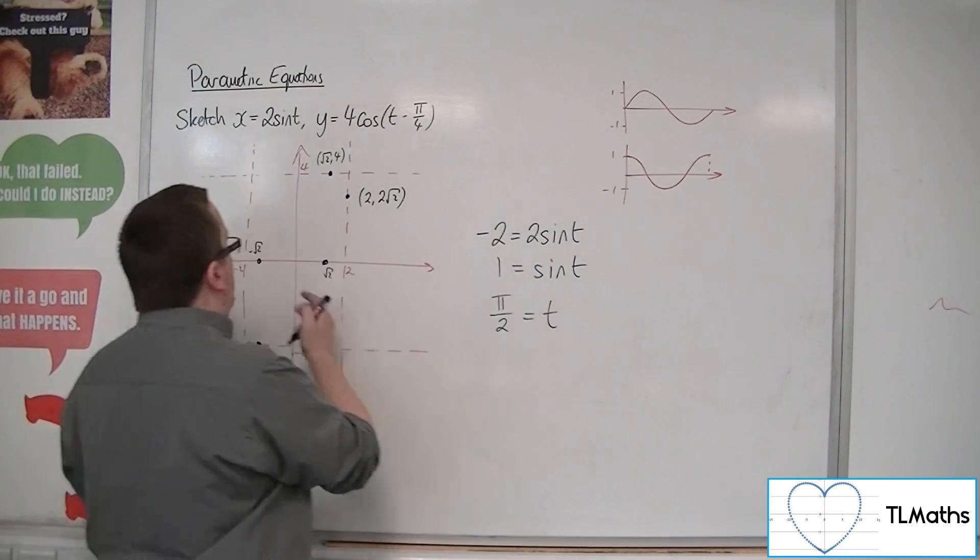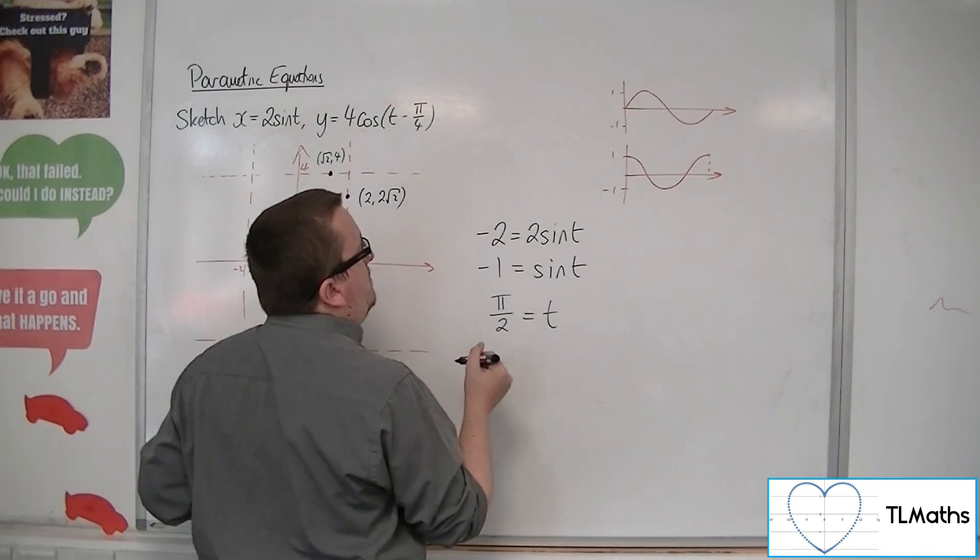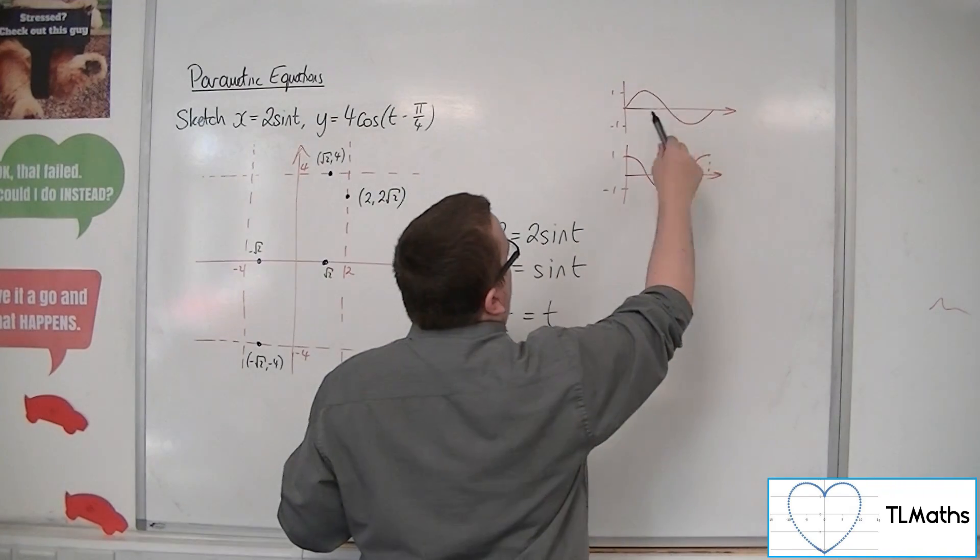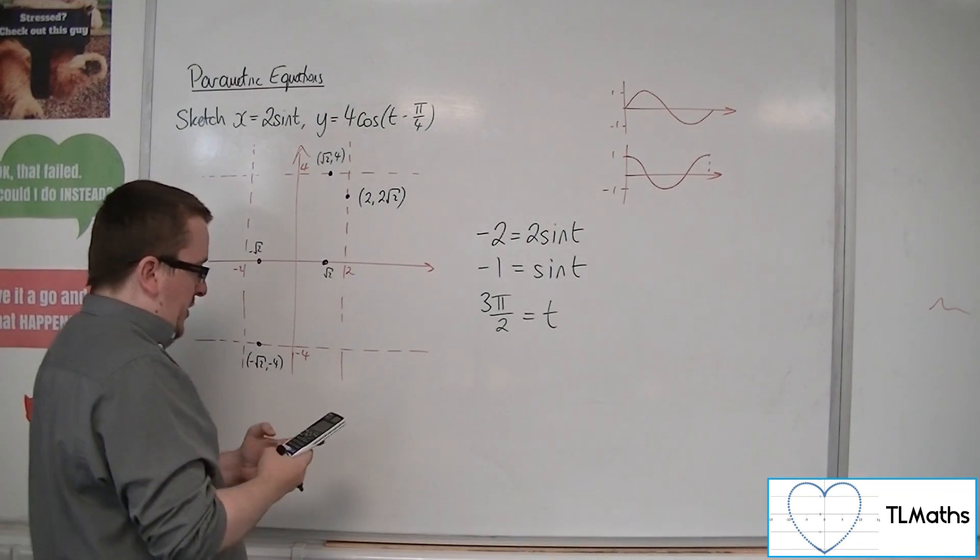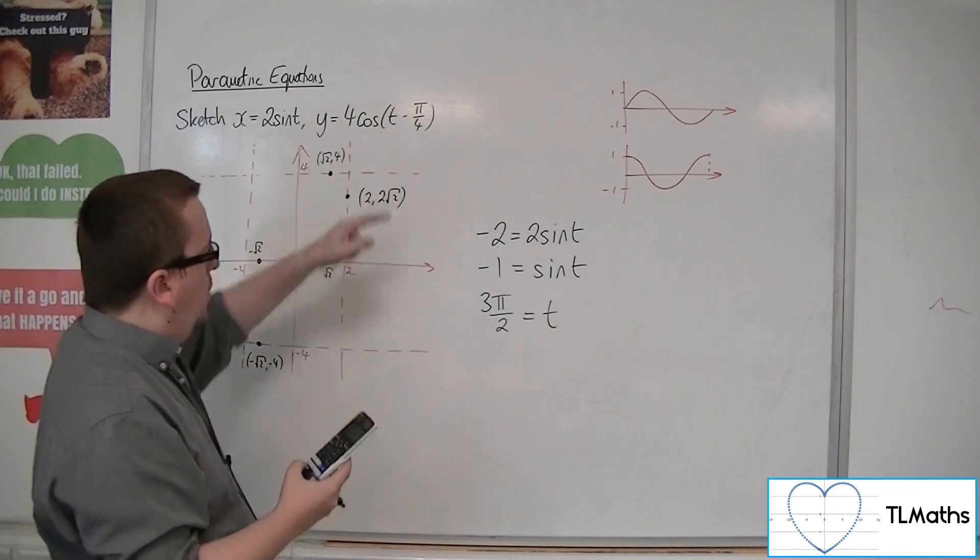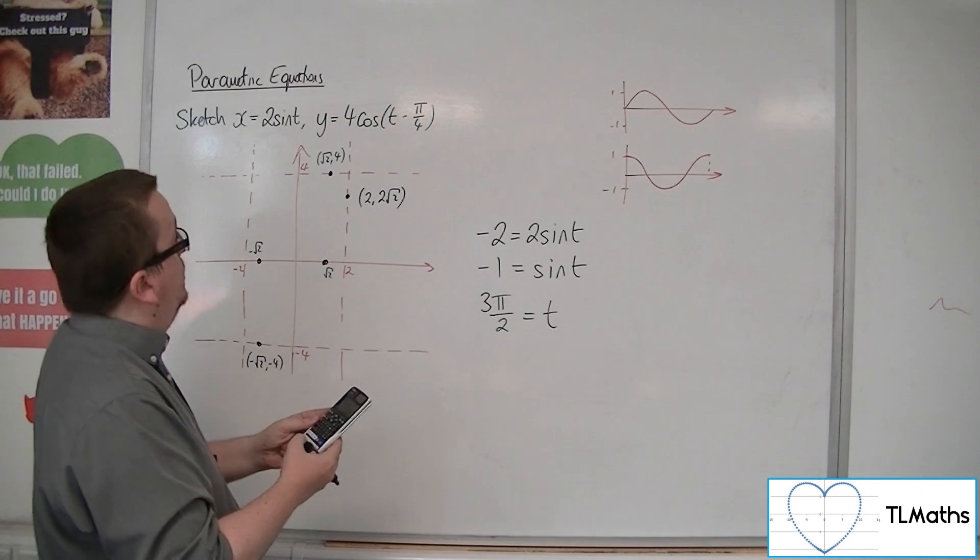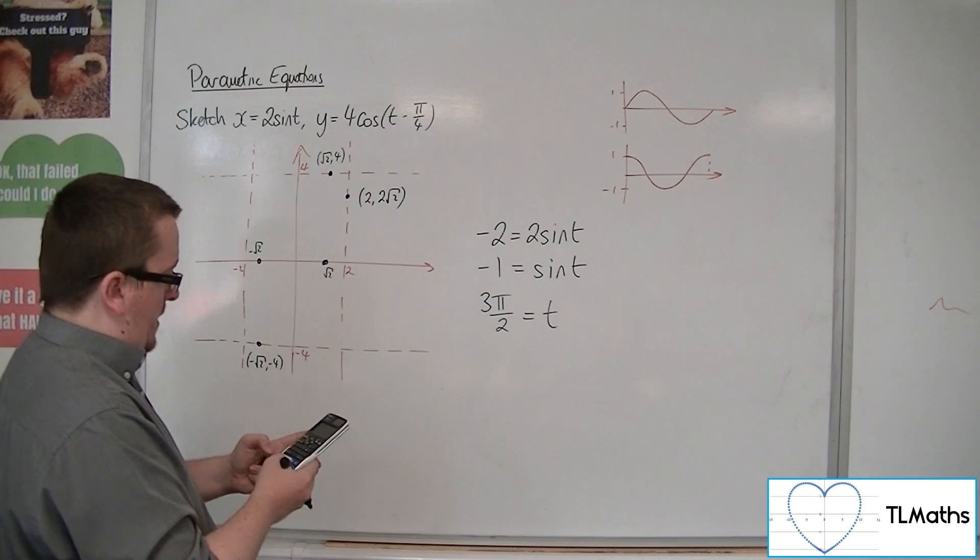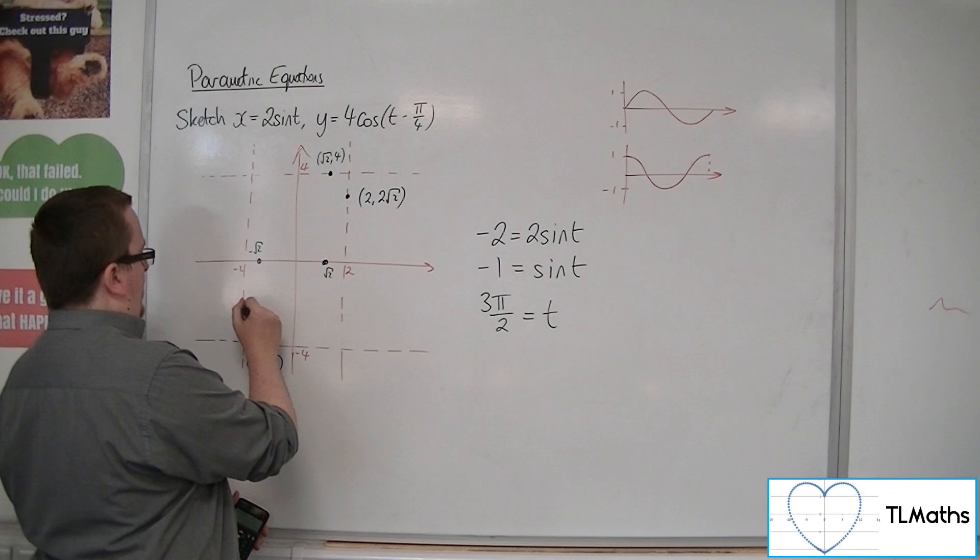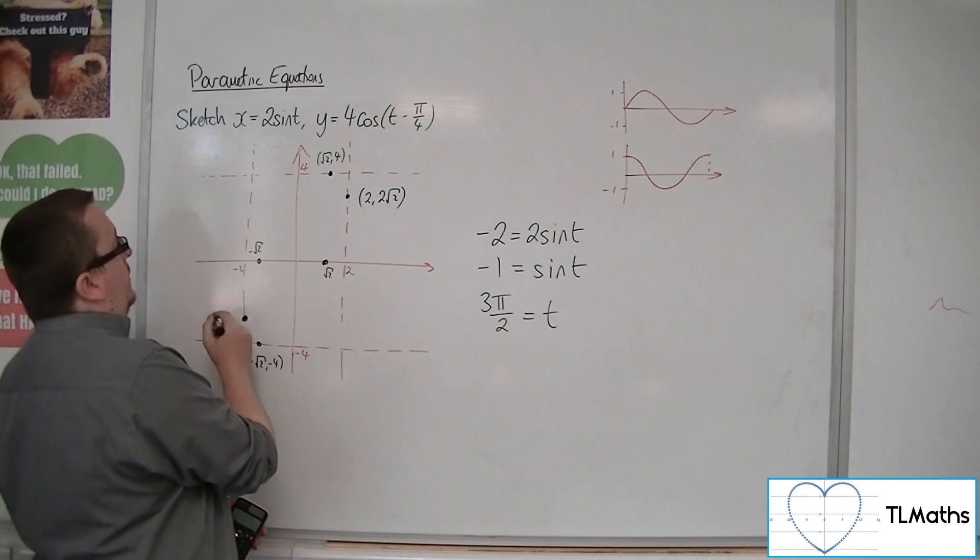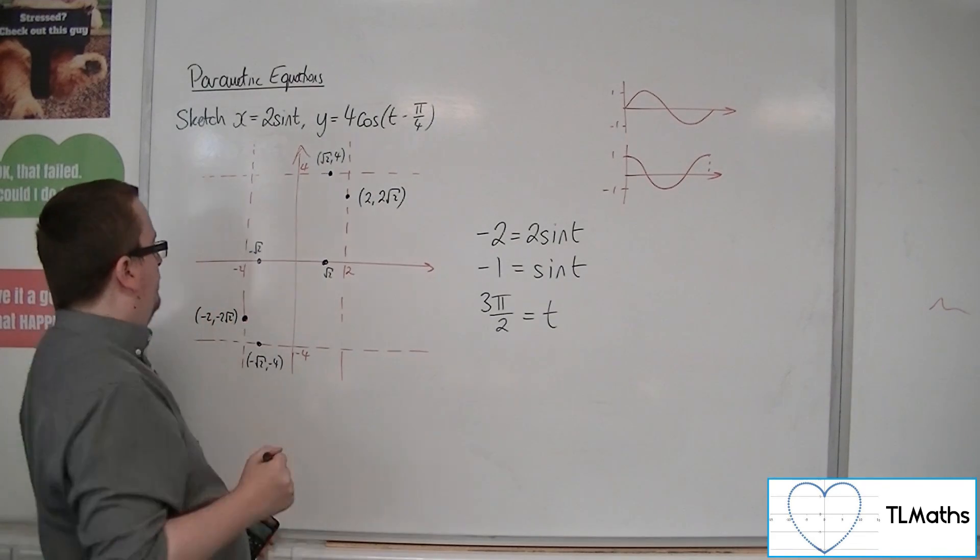What else we got? Well sticking a minus sign there and see where it hits the rectangle on this side. So that'd be minus 1. So where's sine minus 1? That's at 3 pi over 2. So if I stick 3 pi over 2 into this y, 4 lots of cos of 3 pi over 2 take away pi over 4, and I get minus 2 root 2. So that's down here somewhere. So that's minus 2 minus 2 root 2.